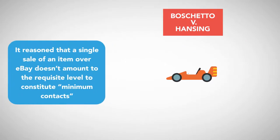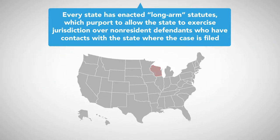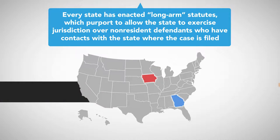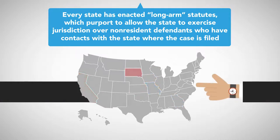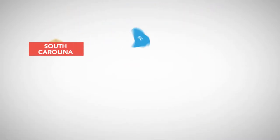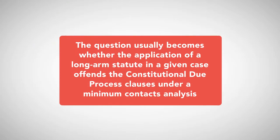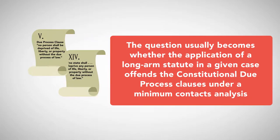The court reasoned that a single sale of an item over eBay doesn't amount to the requisite level to constitute minimum contacts. Every state has enacted long-arm statutes which purport to allow the state to exercise jurisdiction over non-resident defendants who have contacts with the state where the case is filed. For example, South Carolina's long-arm statute provides that a court may exercise personal jurisdiction over a person as to a cause of action arising from the person transacting any business in this state. The question usually becomes whether the application of a long-arm statute offends the constitutional due process clauses under a minimum contacts analysis.